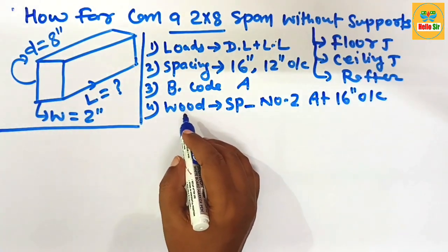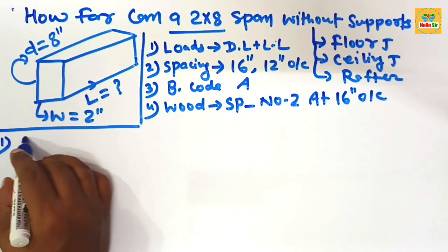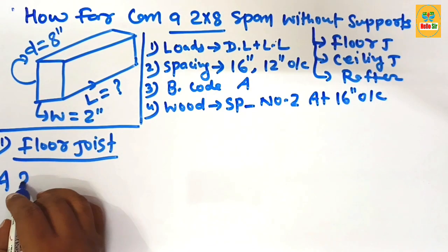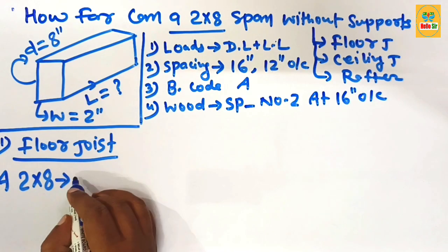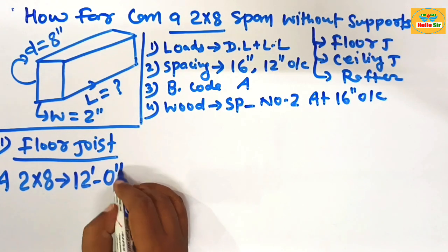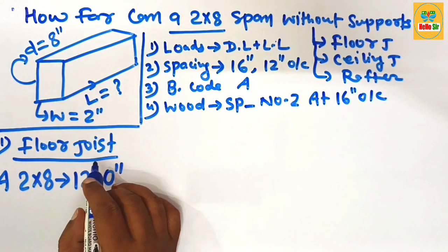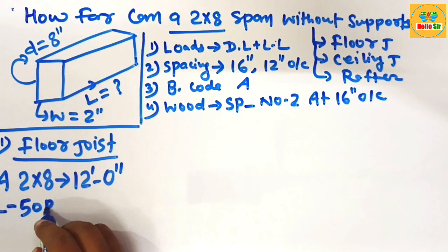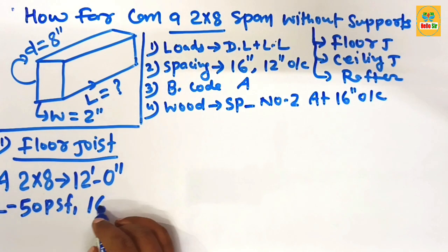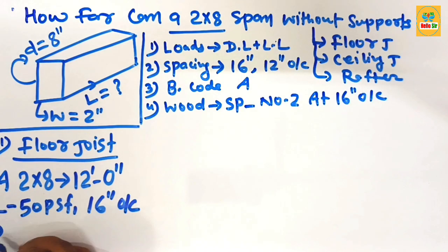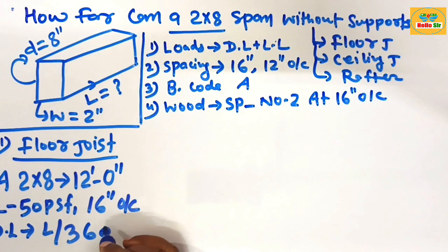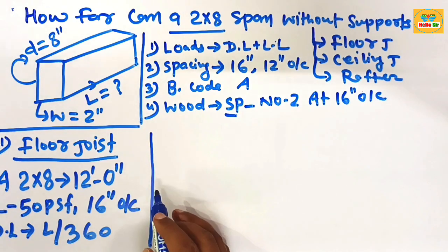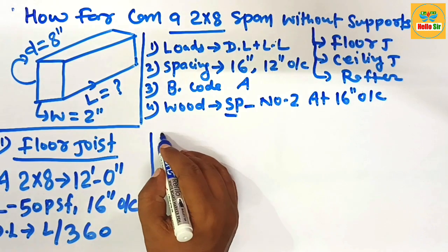First, the floor joist span: a 2 by 8 dimensional lumber as a floor joist can span a maximum distance of 12 feet. The conditions are a total load of 50 pounds per square foot, spacing of 16 inches on center, a deflection limit of L/360, and southern pine number two grade wood species.